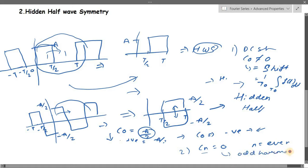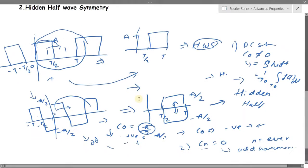One more thing: this signal is neither even nor odd originally. But after shifting it downward, the signal became odd. So the property of an odd function will also apply. In hidden half wave symmetry, if after shifting your signal becomes even, the even property will follow; if it becomes odd, the odd property will follow.